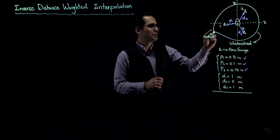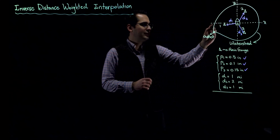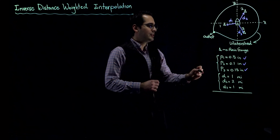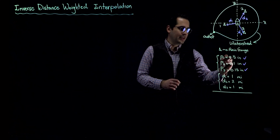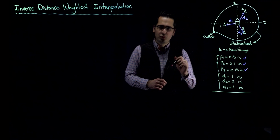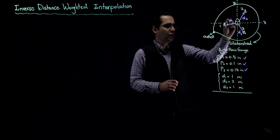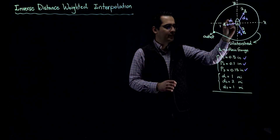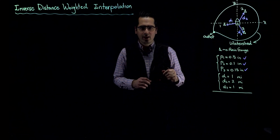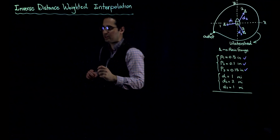Imagine that your house is located right in the middle of this watershed and is surrounded by three rain gauges: number one, number two, and number three. You have the depth of rainfall for gauges one, two, and three, but what you want to find is the amount of rainfall right at your house — at this location.